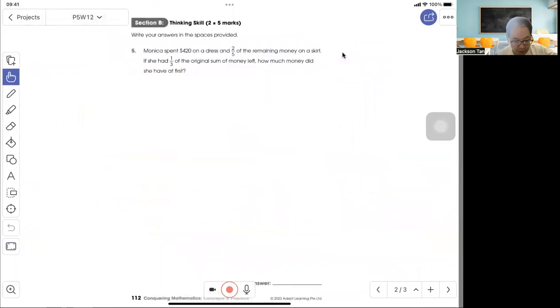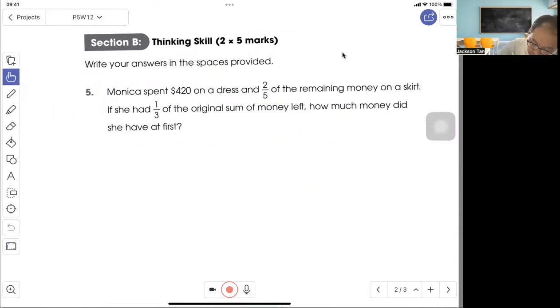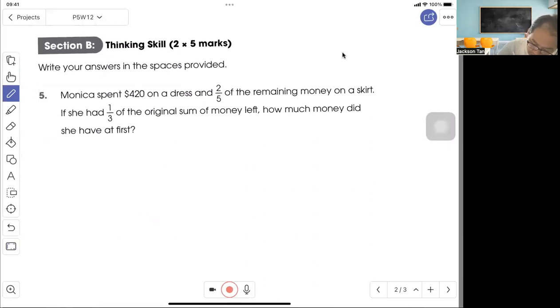Question 5. Monica spent $420 on a dress and two-fifths of the remaining money on a skirt. So here, I put $420 first, followed by my remaining.